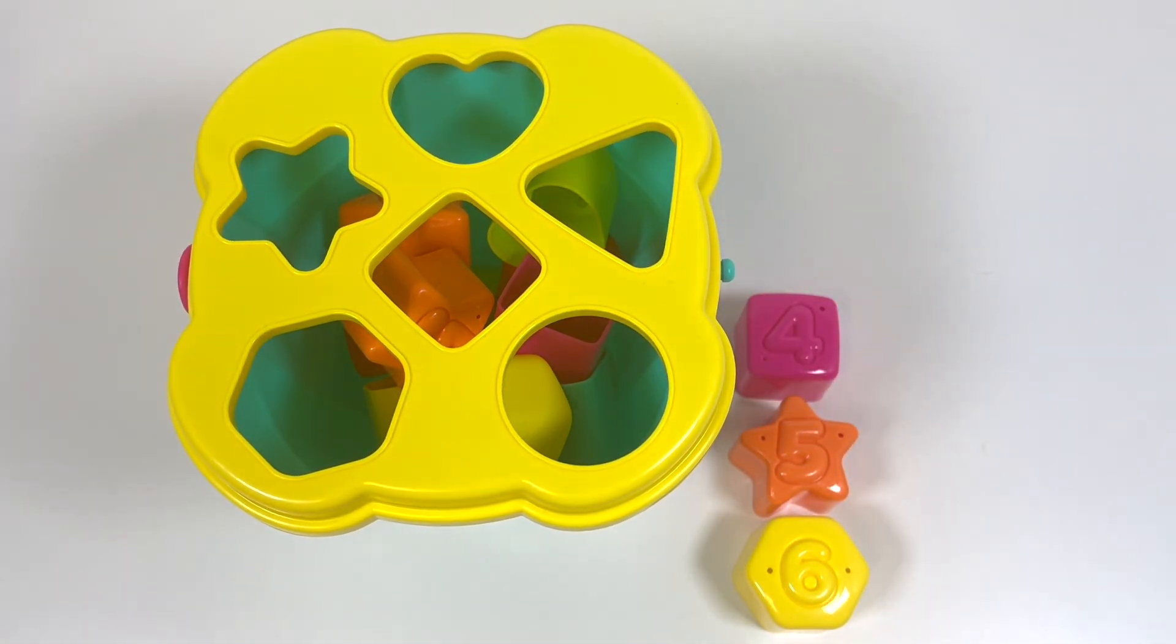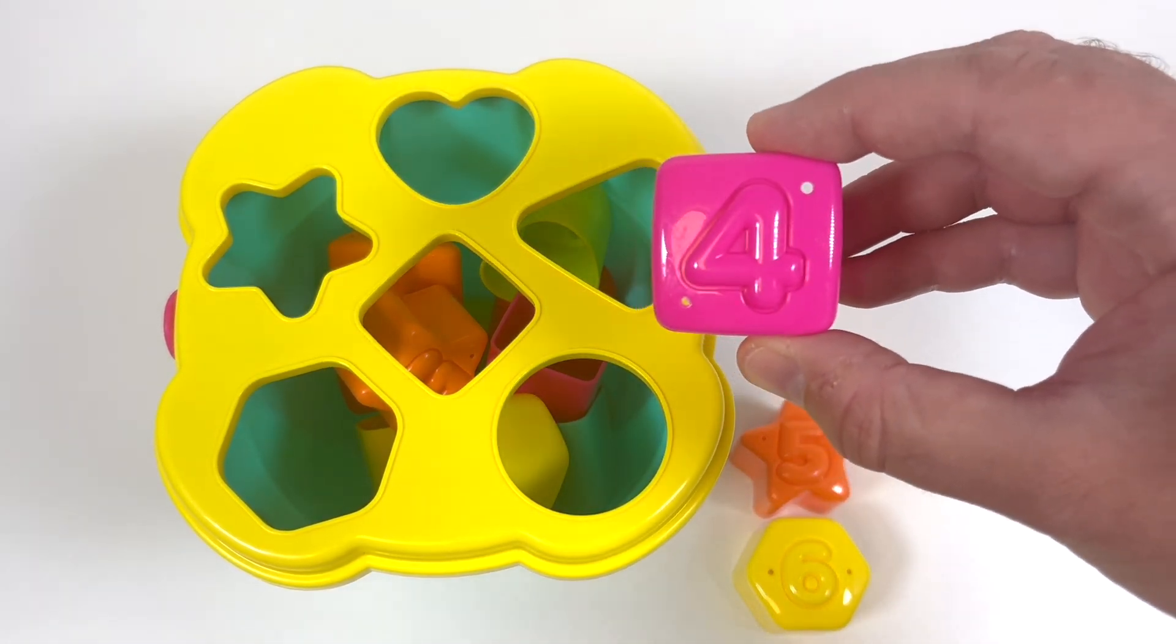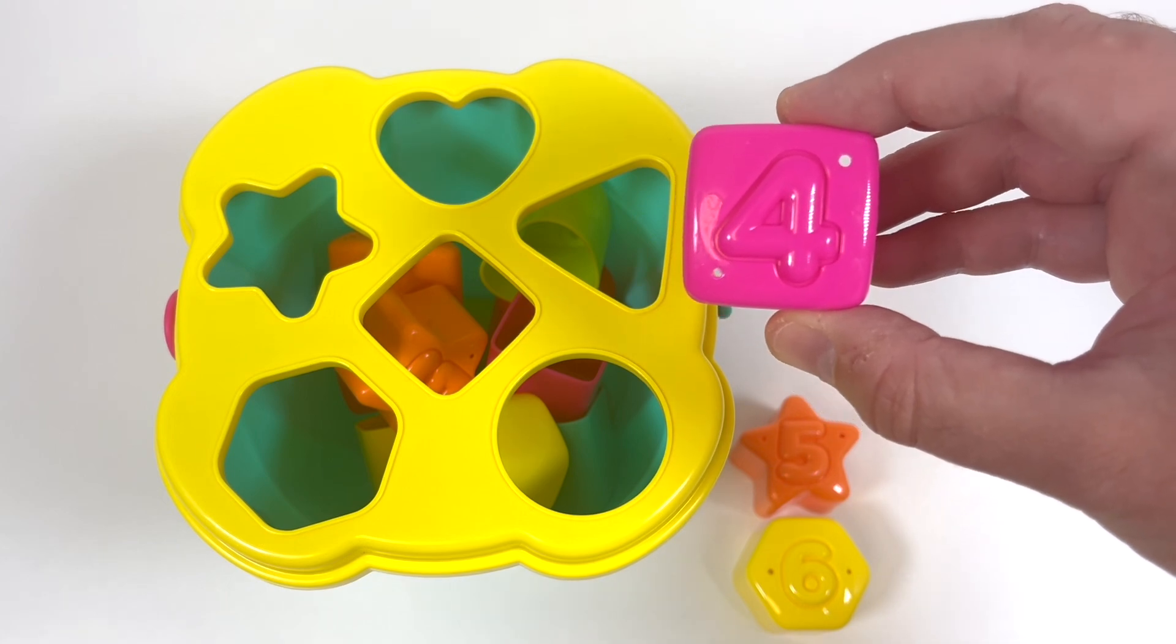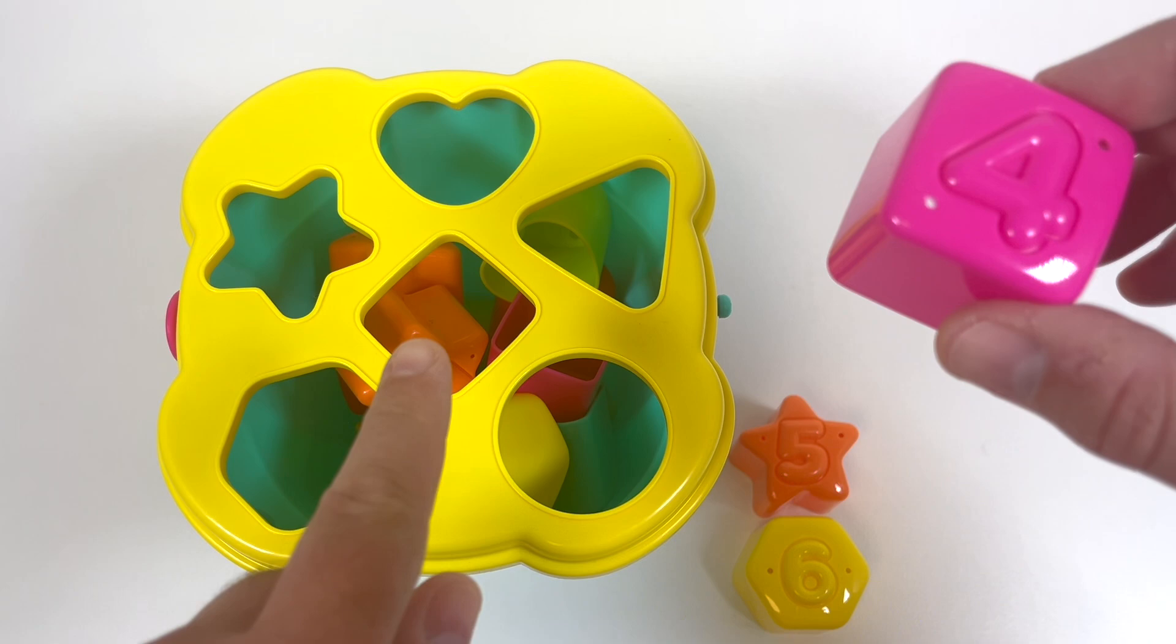Let's give our sorter a bit of a shake. We've got three shapes left. Do you remember where the pink square goes? Here? No, that's not right. Yes, it's there in the middle.